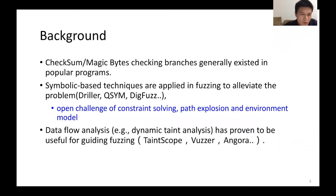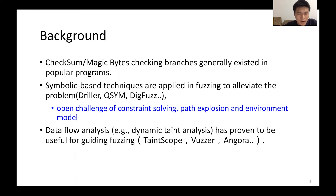As you know, fuzzing has become a more and more popular and practical approach to bug-finding in software. However, real-world software generally contains many hard-to-handle program characteristics like checksum or magic bytes and checking branches, which extremely impede fuzzing.